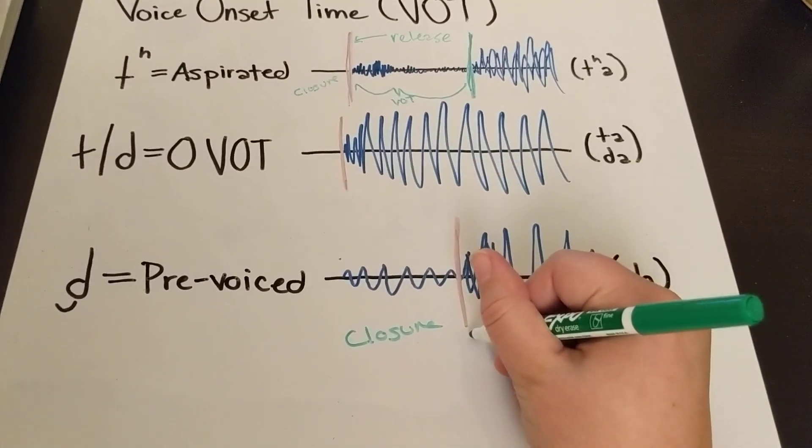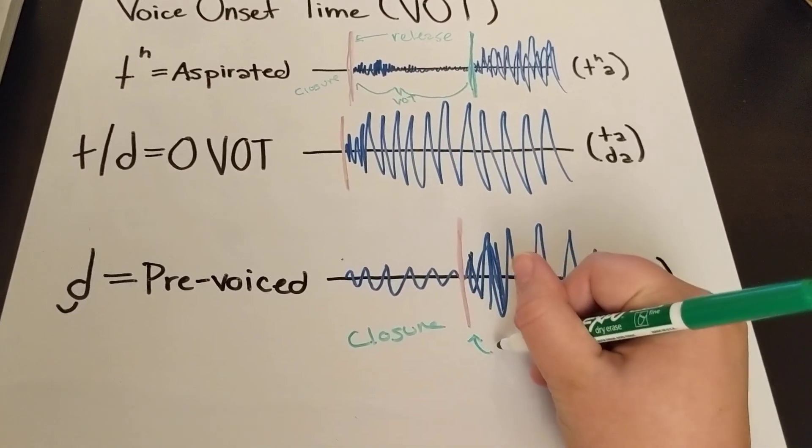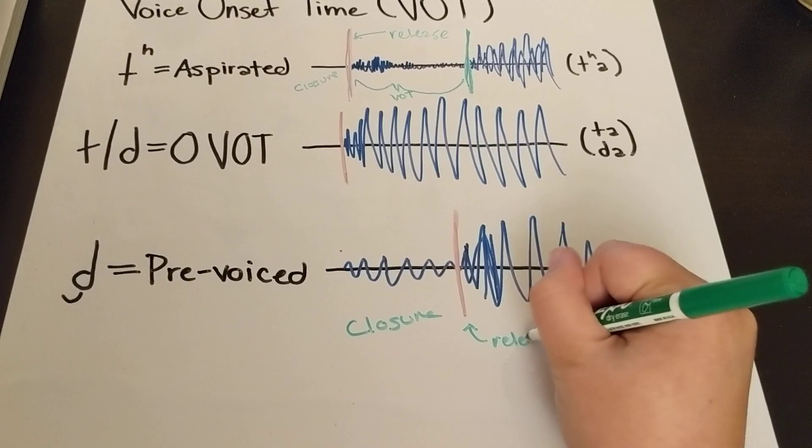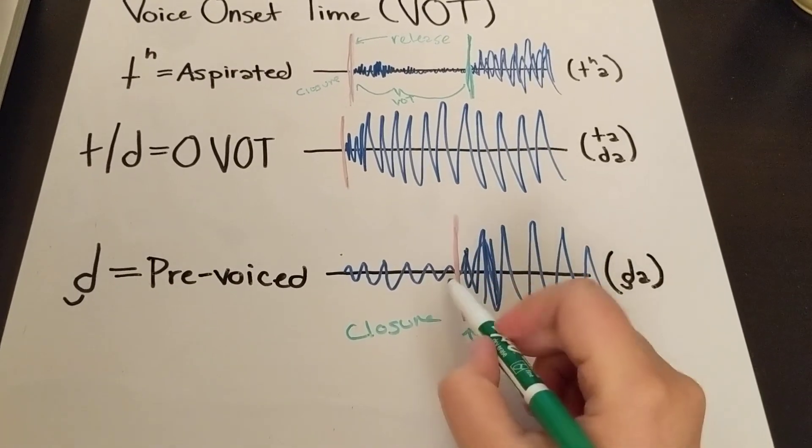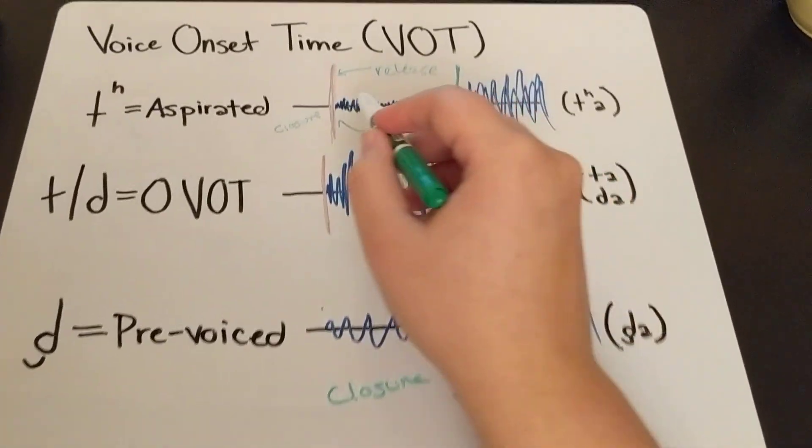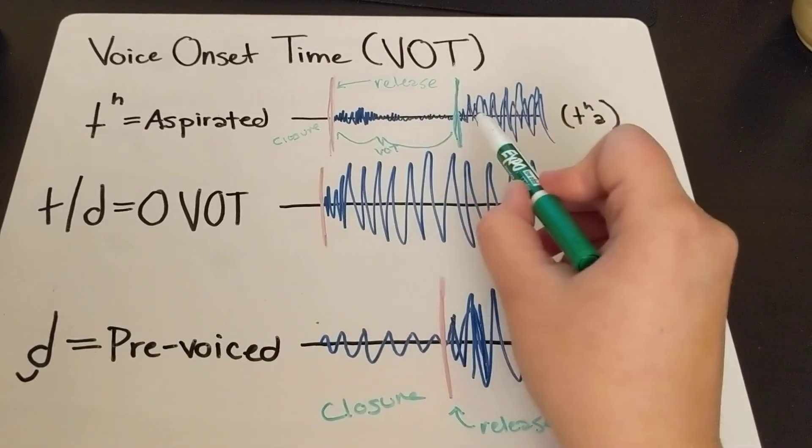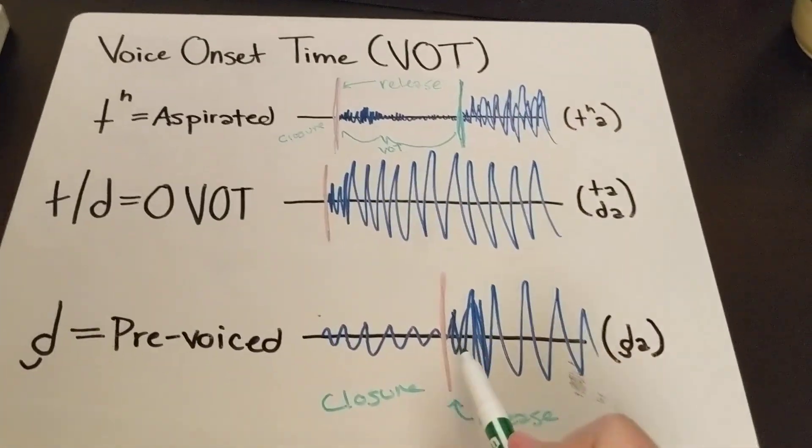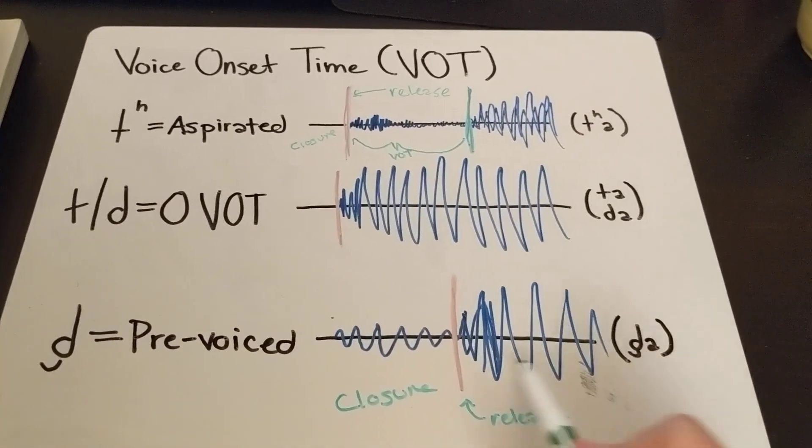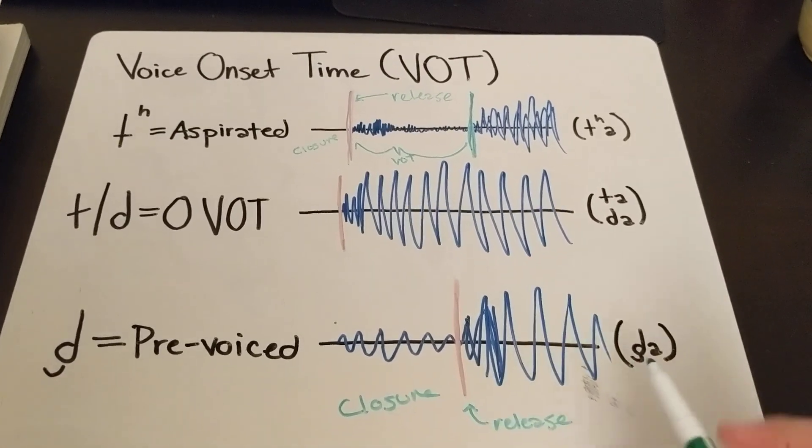And then you get the release. And right after that, there's no hissiness like we saw up here. So there's this weird sort of low-level hissiness. And here it goes straight into vowel sound, this louder sound that signals that it's a vowel.